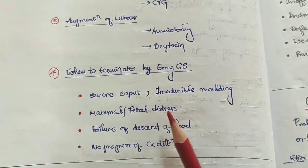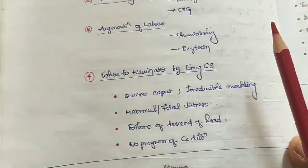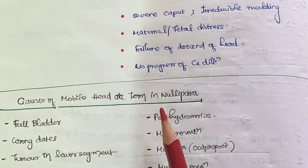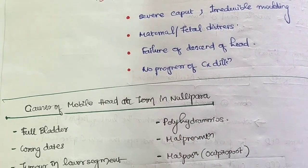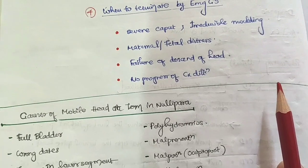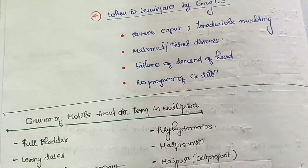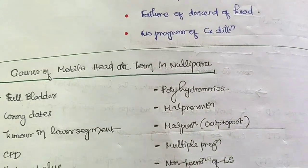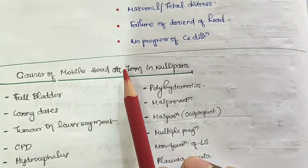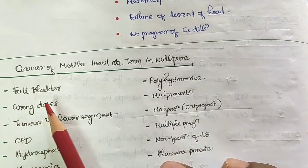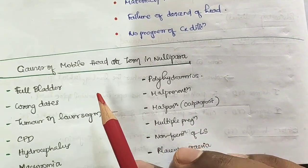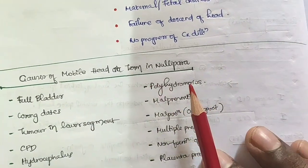This is CPD management. We will also discuss the causes of mobile head at term in a nullipara. Causes include: full bladder, wrong dates (incorrect gestational age calculation), and CPD itself.